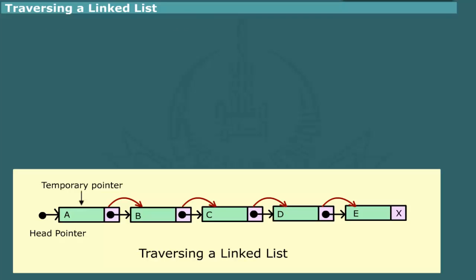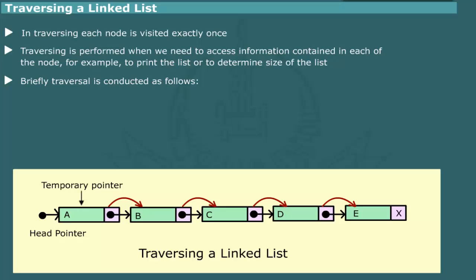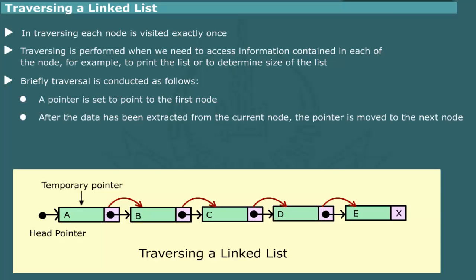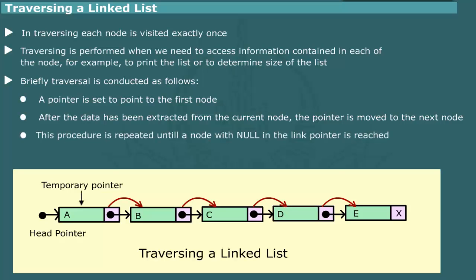Traversing a linked list. In traversing a list, we visit each node exactly once. Traversing is performed when we need to access information contained in the nodes of a linked list. For example, if we want to print the list or determine the size of a list, traversal would be the natural procedure. In order to traverse a list, we normally use a pointer which is initially set to point to the first node. After the first node has been processed, the pointer is moved to the second node by using the link pointer of the first node. This process continues until a node is encountered with a link pointer containing a null value.